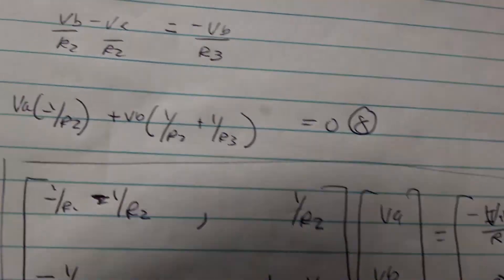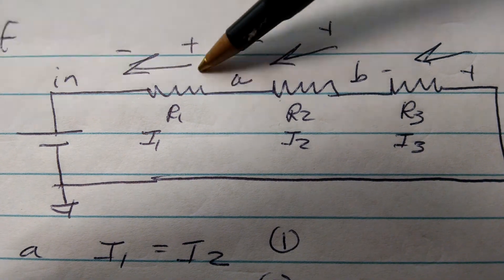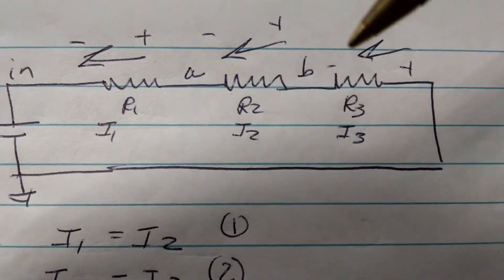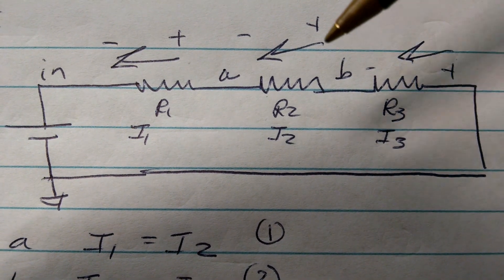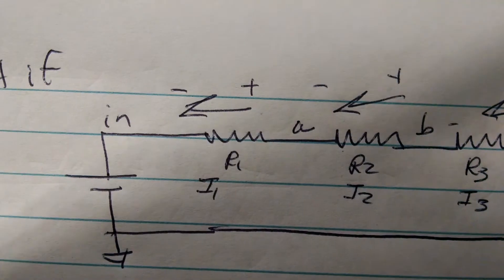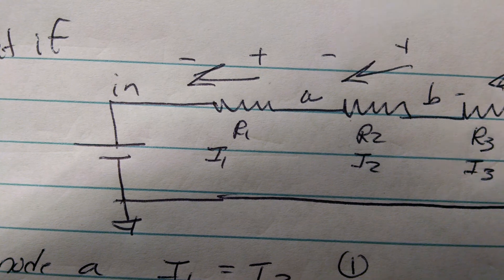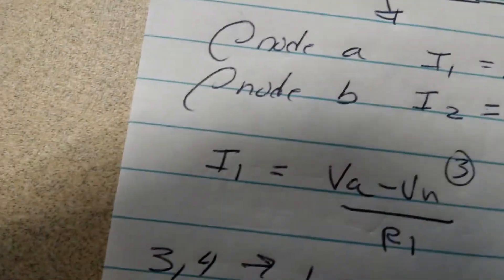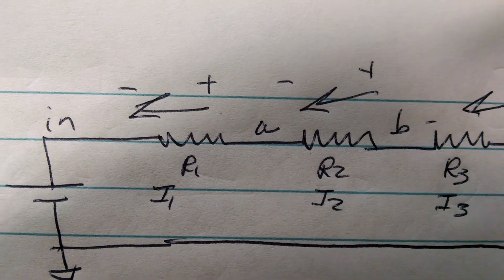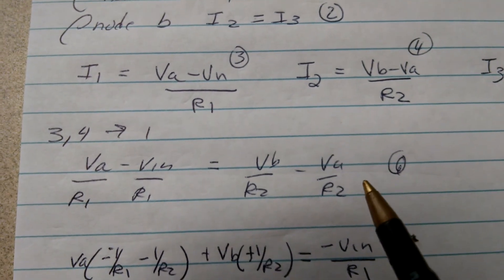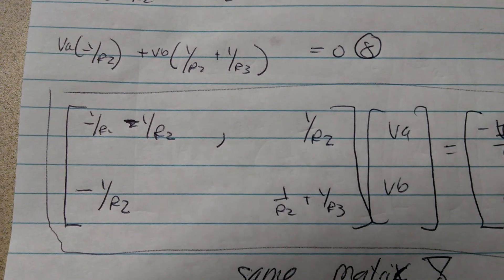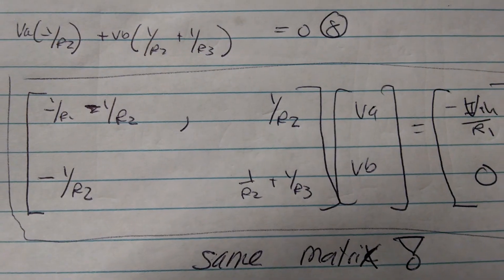So what if we change some current directions? Now I have everything going from right to left, right to left, right to left, right to left. Traditionally we would have gone left to right because that's the higher potential. But notice — I have the higher potential plus, minus, plus, minus, plus, minus. At node A, I1 equals I2 because I2 is coming into the node and I1 is leaving. I2 equals I3 because I3 is entering and I2 is leaving. When you plug these equations into each other, lo and behold, we get the same matrix.